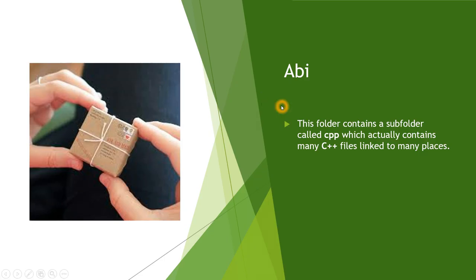First, we'll see what is ABI. ABI stands for Application Binary Interface. This folder contains a subfolder called CPP, which actually contains many C++ files linked to many places. So ABI contains a folder called CPP, and CPP contains all the C++ files which are required for the operation of the Android system.